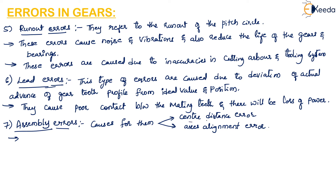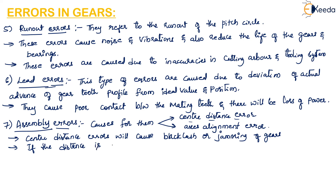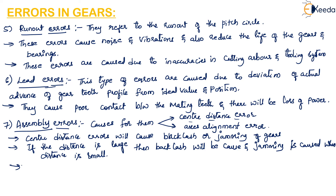If the center distance between the two mating gears is not correctly positioned, two problems can occur: if the center distance is too large, backlash is caused; if it is too small, jamming occurs. The axis alignment error is caused when the axes of the mating gears are not parallel to each other, resulting in misalignment between the two gears, which is a major problem. This covers all the errors in gears.